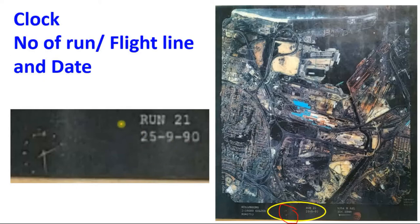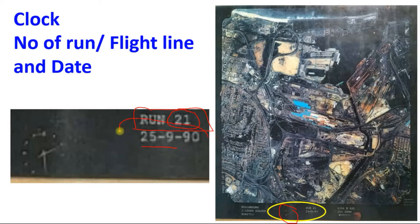Next is the run — run 21. Run means the flight line number. These photographs were captured on flight line number 21. The date shown is 25 September 1919, which is the date of capture of the aerial photographs and is important for interpretation.